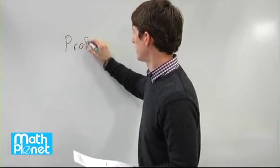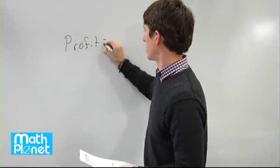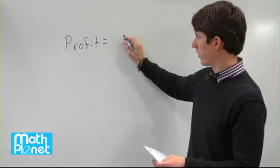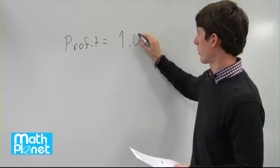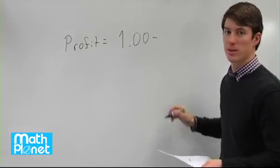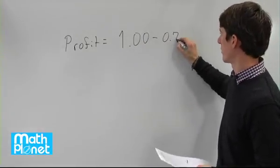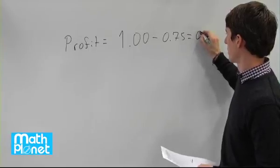So first we need to find the profit, which is the amount sold, which is $1.00 minus the amount bought, $0.75, which is just $0.25.